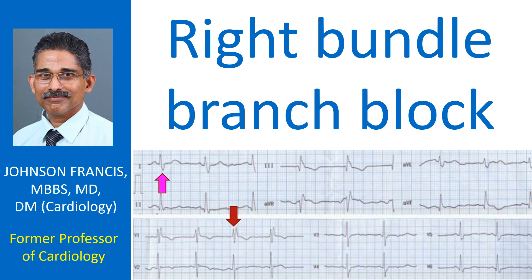Right bundle branch block is characterized by an RSR' pattern with the R' being slurred in V1, producing a QRS duration of 120 ms or more. This delayed right ventricular activation is reflected as a delayed and slurred S wave in leads oriented to the left ventricle — lead I, AVL, V5, and V6.